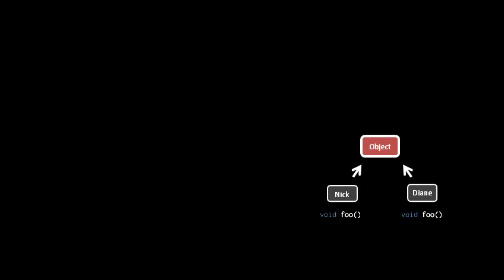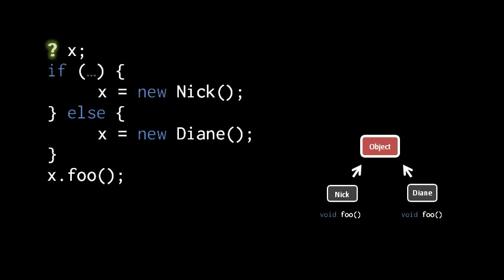And what we want to be able to do is hold these two unrelated objects in a common reference so we can invoke this method they both share in such a way that which method is invoked depends upon the type of the object at runtime. So for example, we'll have a reference x to which we might assign a Nick or a Diane object, and then when we invoke x.foo, which foo gets invoked at runtime should depend upon whether x is holding a Nick object or a Diane object.